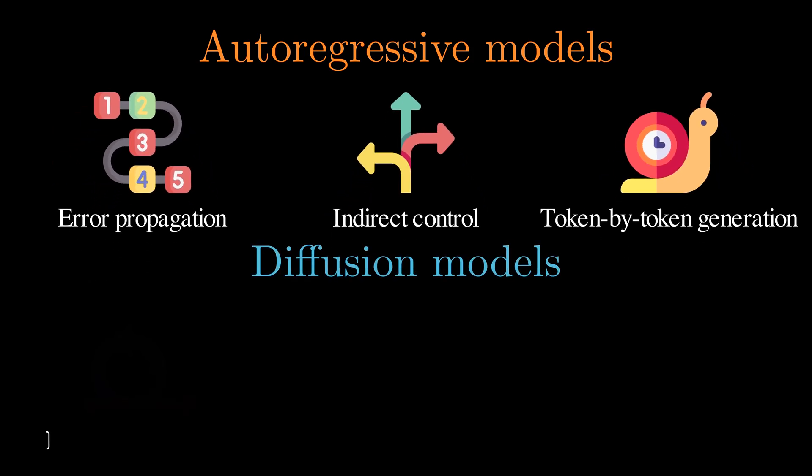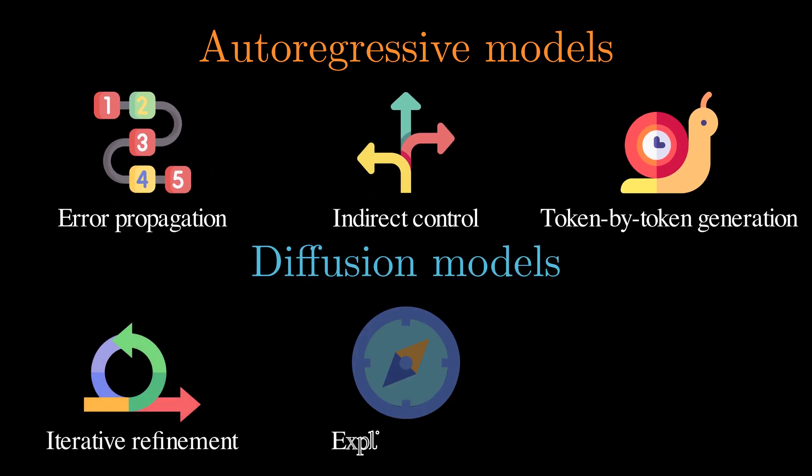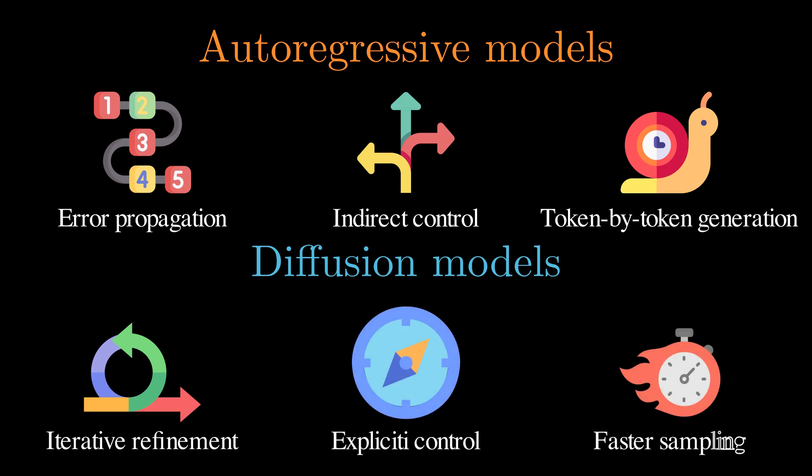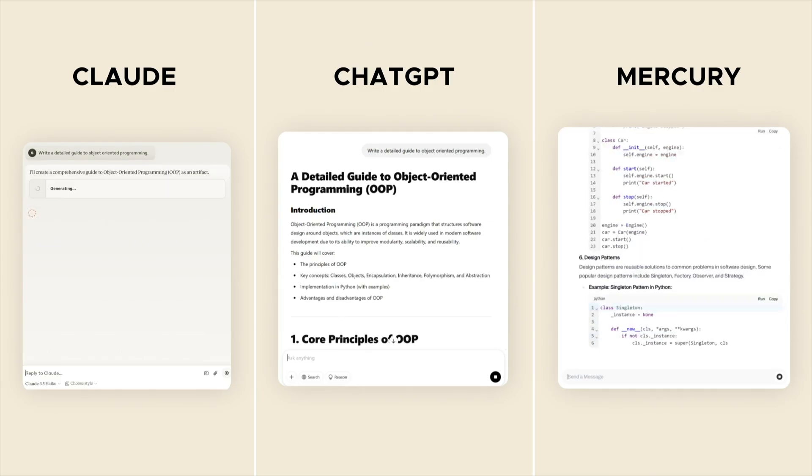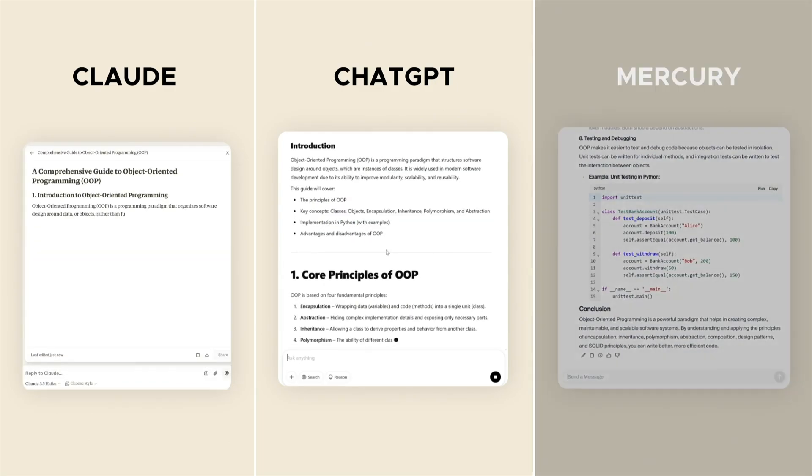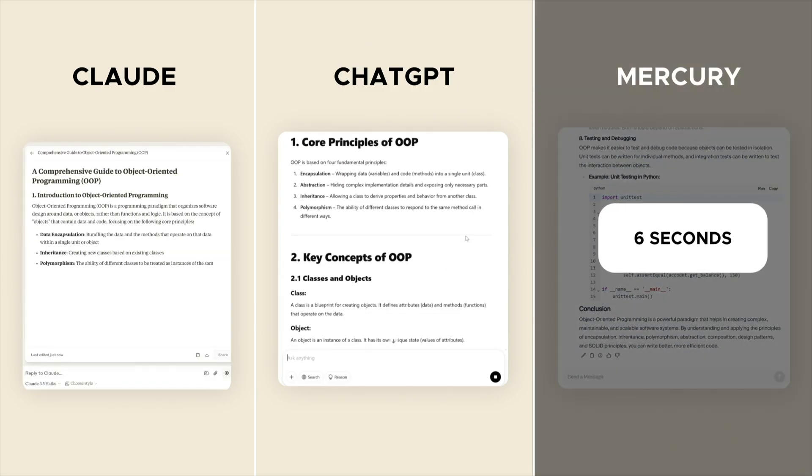In contrast, diffusion models offer iterative refinement, explicit control, and faster sampling. Here is a demo of Mercury, a recent diffusion language model. It achieves remarkably fast text generation at 1000 tokens per second.